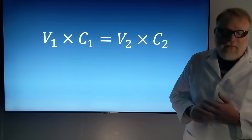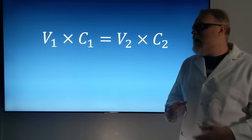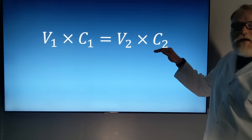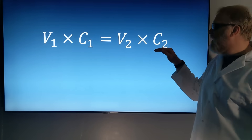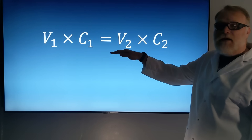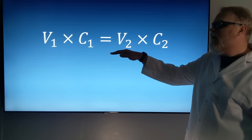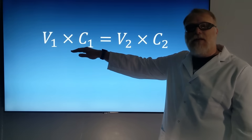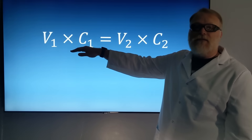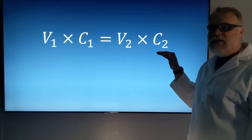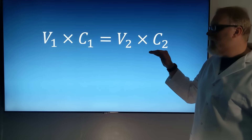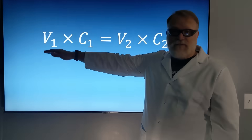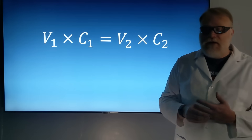Let's say we want to do some simple math: we want 100 for our concentration 2, we want 100 for our volume 2, and our concentration 1 is 1,000. So 100 times 100 is 10,000, divided by 1,000 would be 10 — that's the simple math.